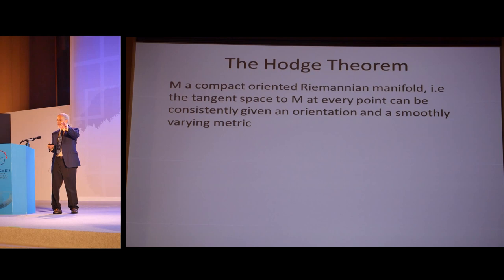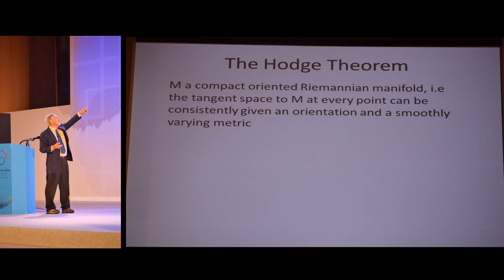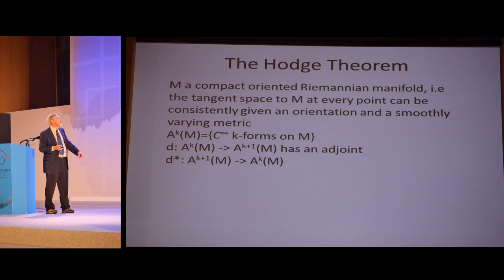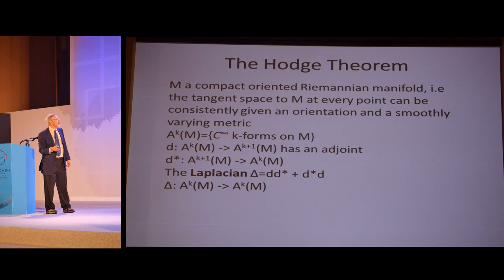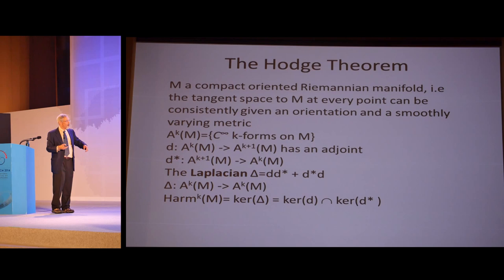Lebesgue theory tells you what can be integrated, but differential forms tell you where you can integrate things. The Hodge theorem now: the fact that you have a choice of de Rham representative, you might want to pick a unique one. Hodge realized you could do this if you add a little more structure. M has to be oriented, which complex manifolds always are, and it has to be a Riemannian manifold. The tangent space at every point has to have a positive definite dot product, and that has to vary smoothly. If I let A^k(M) be these smooth k-forms, then the exterior derivative has an adjoint that goes the other way from k+1 forms to k forms. Then you can define the Laplacian d d* plus d* d, and that maps k-forms to k-forms. The harmonic k-forms are just the kernel of this, which is the intersection of the kernel of d and the kernel of d*.